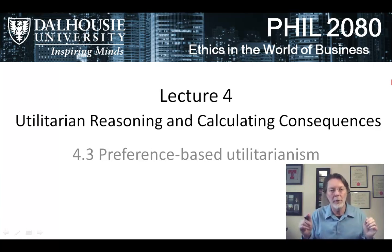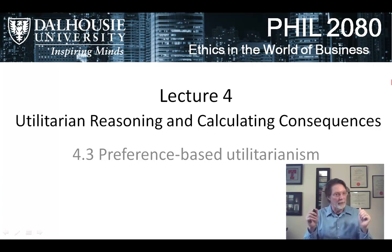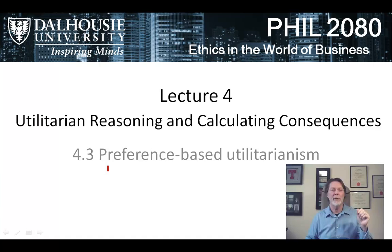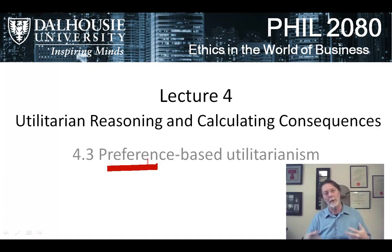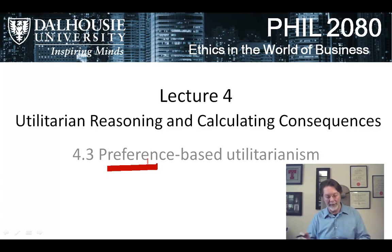Welcome to the third part of the fourth lecture on utilitarian reasoning. We're going to look in this segment at preference-based utilitarianism — the idea that you ought to maximize the aggregate amount of people getting what they really want, what they choose to want.